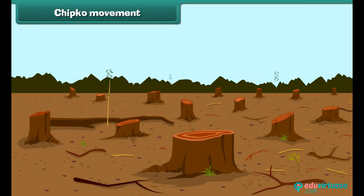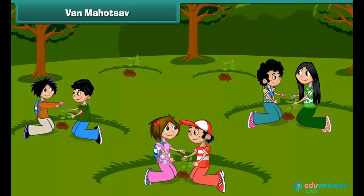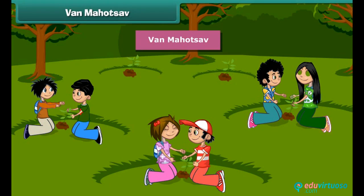Now let's know about an event related to protection against the cutting of trees. The Chipko Movement, or Chipko Andolan — literally meaning 'to stick' in Hindi — is a social-ecological movement through the act of hugging trees to protect them from being felled.